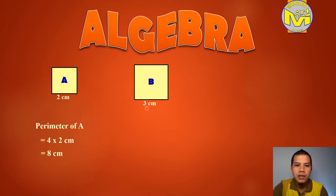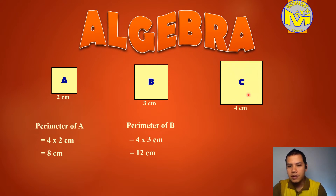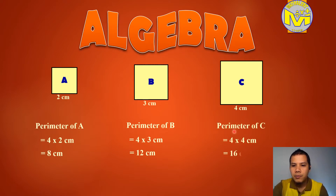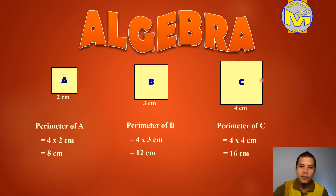Next, Square B. Each side is equivalent to 3 centimeters. So what is the perimeter of Square B? The same thing: 4 times 3 is equal to 12. We can also use addition: 3 plus 3 plus 3 plus 3 is equal to 12. The same here: 2 plus 2 plus 2 plus 2 is equal to 8. Next, Square C — what is the perimeter? 4 times 4, since 4 sides times the length of each side, so 4 times 4 is equal to 16. Or simply add 4 plus 4 plus 4 plus 4 is equal to 16.